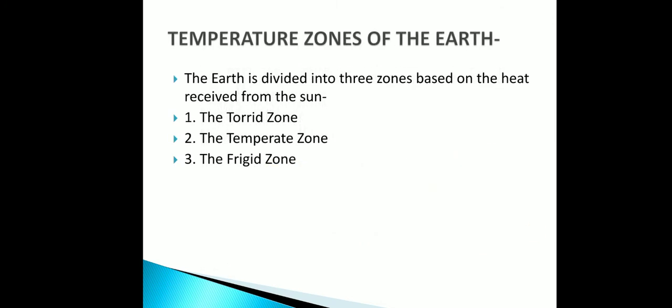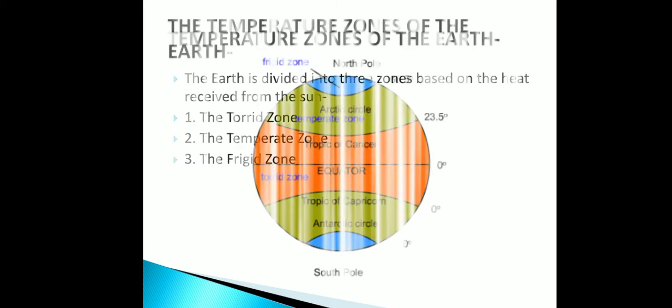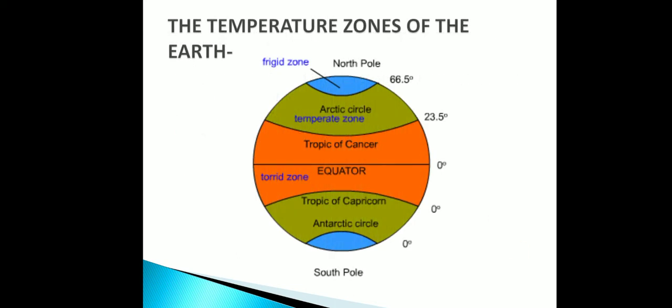The Earth is divided into three temperature zones based on the heat received from the sun: the Torrid Zone, the Temperate Zone, and the Frigid Zone. In this picture you can see the Frigid Zone near the North Pole and the South Pole. Between the North Pole and the equator there is the Temperate Zone. The Torrid Zone lies between the Tropic of Capricorn and the Tropic of Cancer.